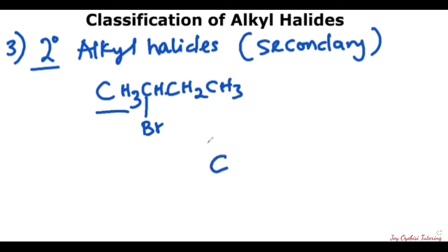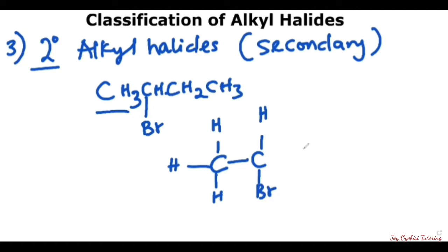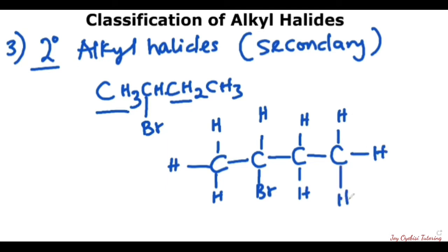So you have this C here, we have this H, this one, and the third one. Then here you have another one attached to hydrogen, attached to bromine, and then to this carbon, also with two hydrogens. Then to this carbon, you have one hydrogen here, another hydrogen here, and the last hydrogen here. So now that you've written it out, this carbon is what we are going to be looking at. This particular carbon is connected to this carbon and to this carbon — that is two carbons. So that is how you know that it is a secondary alkyl halide.